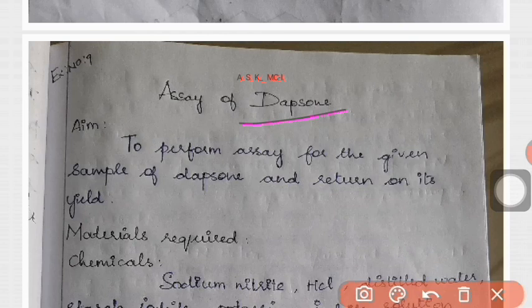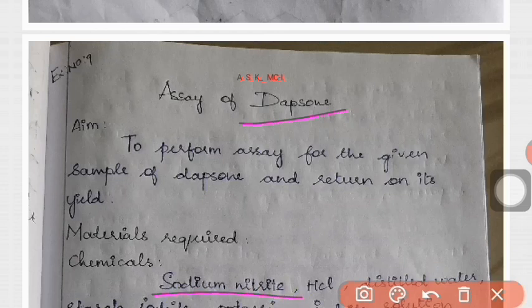It is very important to assay this compound, which is done by the help of diazotization reaction. Diazotization is done by using sodium nitrite and HCl.